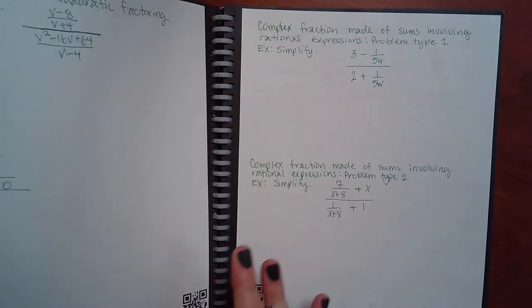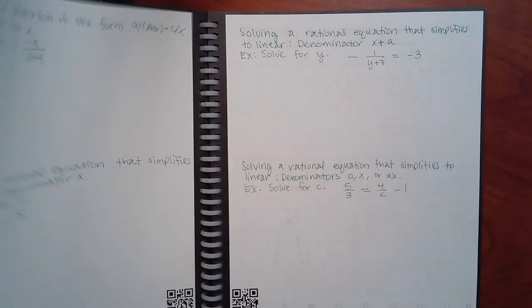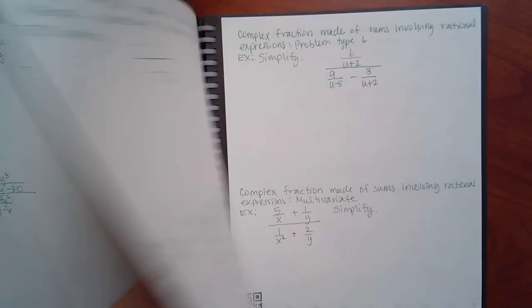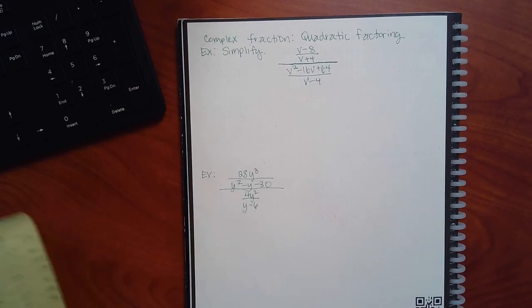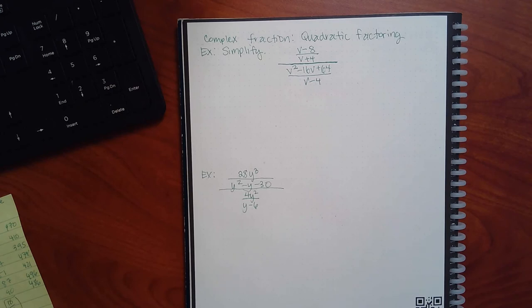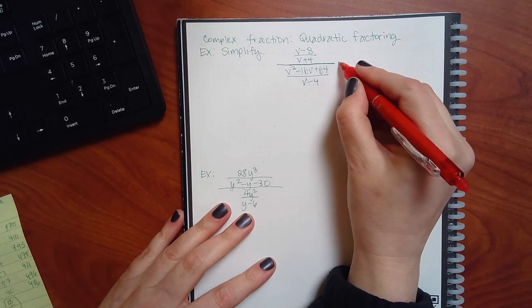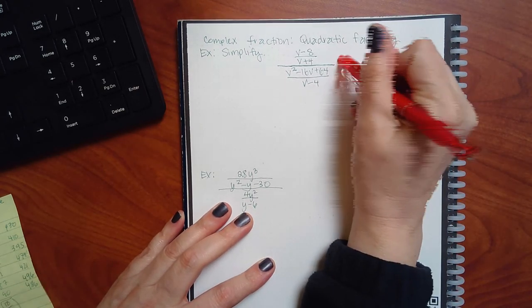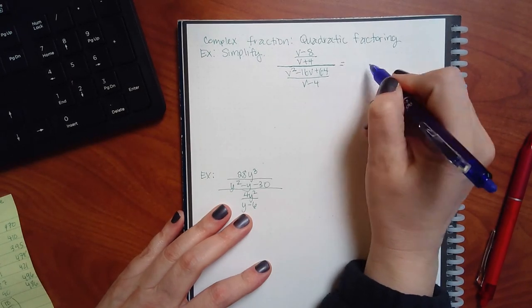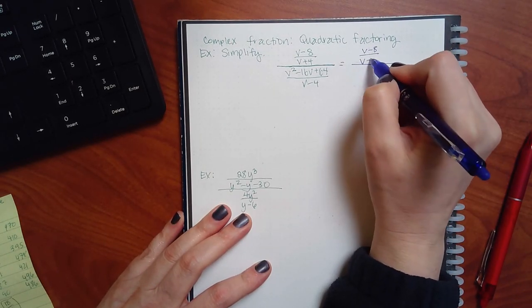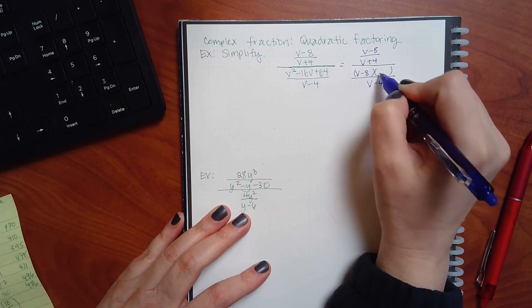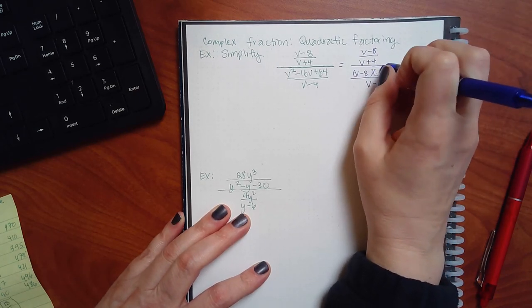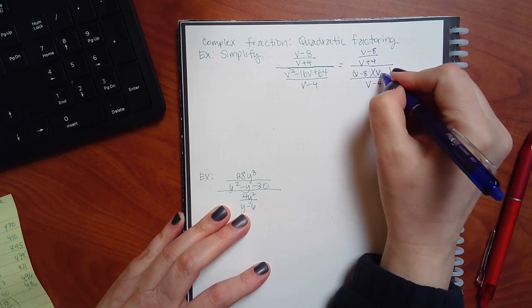How many more of these do we have? There's a bunch — eight of them. Here we go with this one. What do you think we should do first? I'd take that top equation, V squared minus 16V plus 64, and factor that down. Right — it's the only one that needs to be broken down. But if there were more that needed to be factored, we would do those as well. So let's do V over 8, V plus 4. And then what does that trinomial factor into? V minus 8, V minus 8.